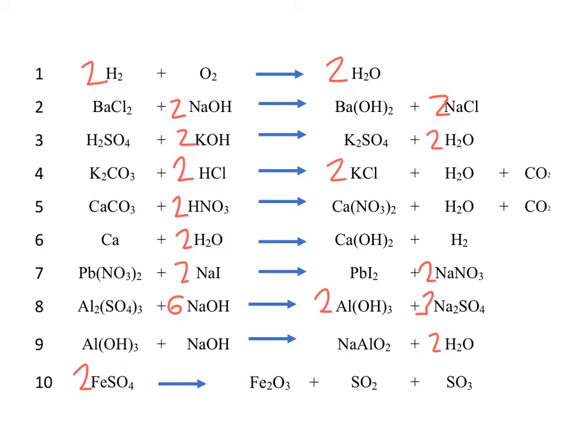We can have a look at question 2, for example. You will see that you have barium chloride, which is of course BaCl2. So it must mean that you have 2 NaCls produced on the right hand side, which then means you've got 2 NaOH on the other side.